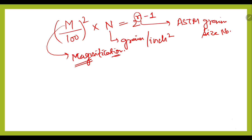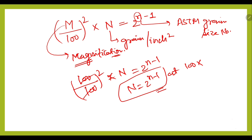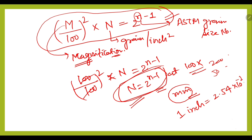The previous formula is given at 100x magnification, so substituting 100 gives N = 2^(n-1) at 100x. In a question, if a different magnification is given — such as 200x or 50x — then we use the general formula. We also need to keep in mind that if the grain size is asked in millimeters, we use the conversion: 1 inch = 2.54 × 10⁻² meters.